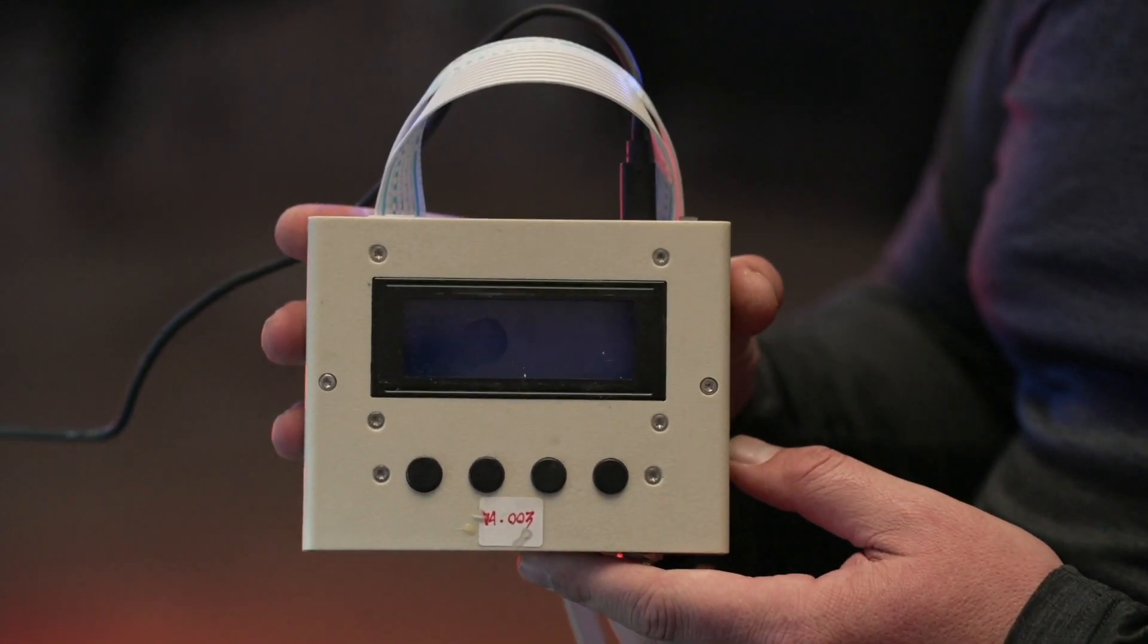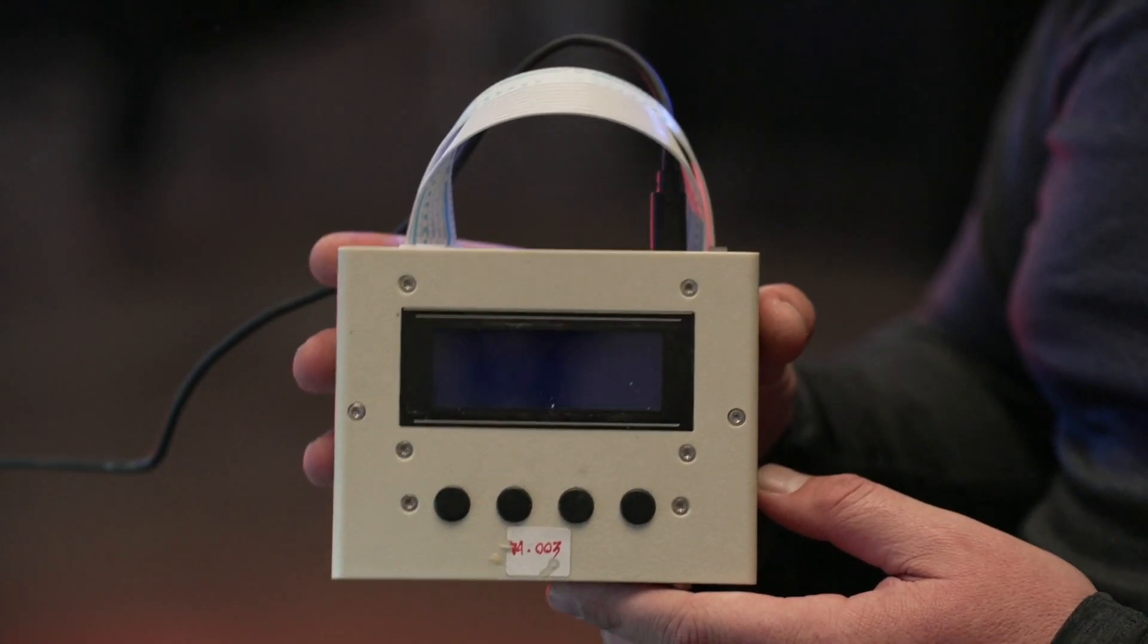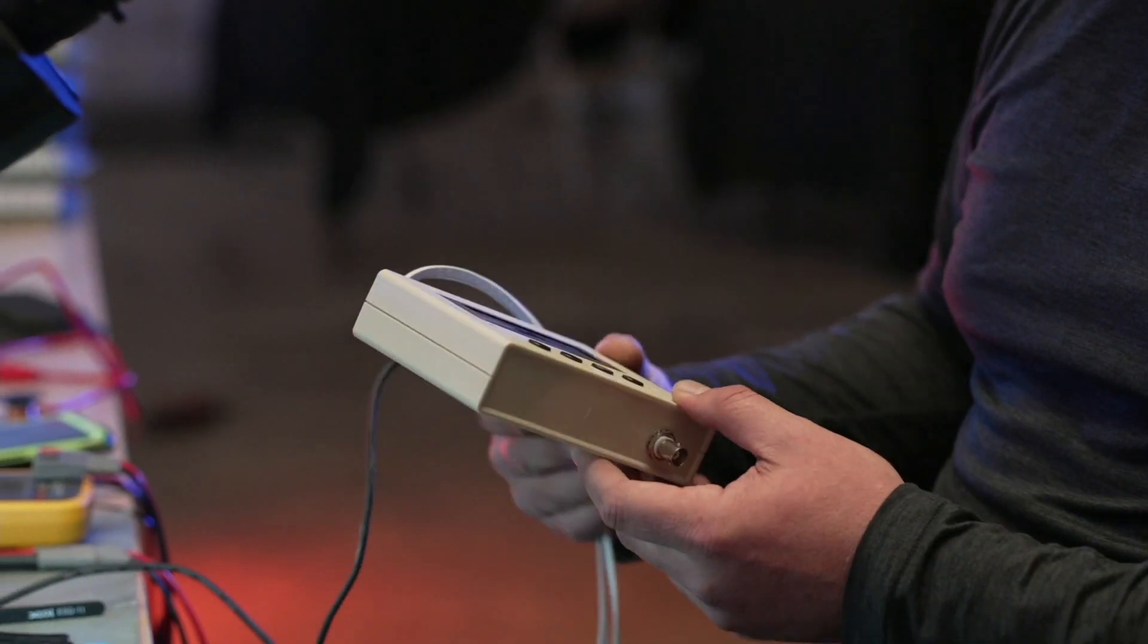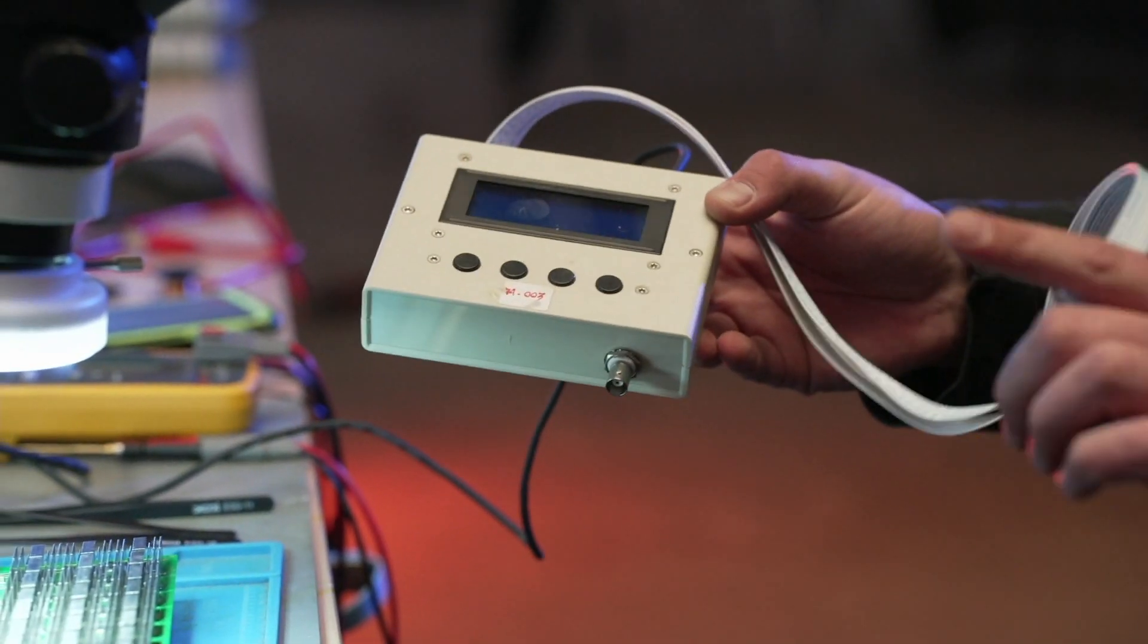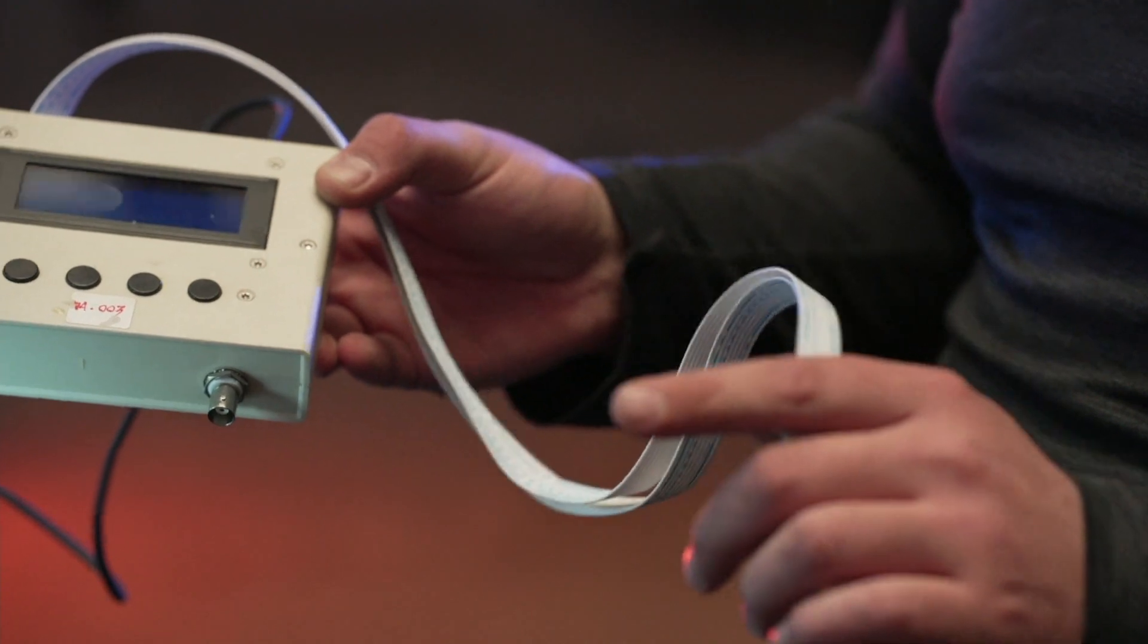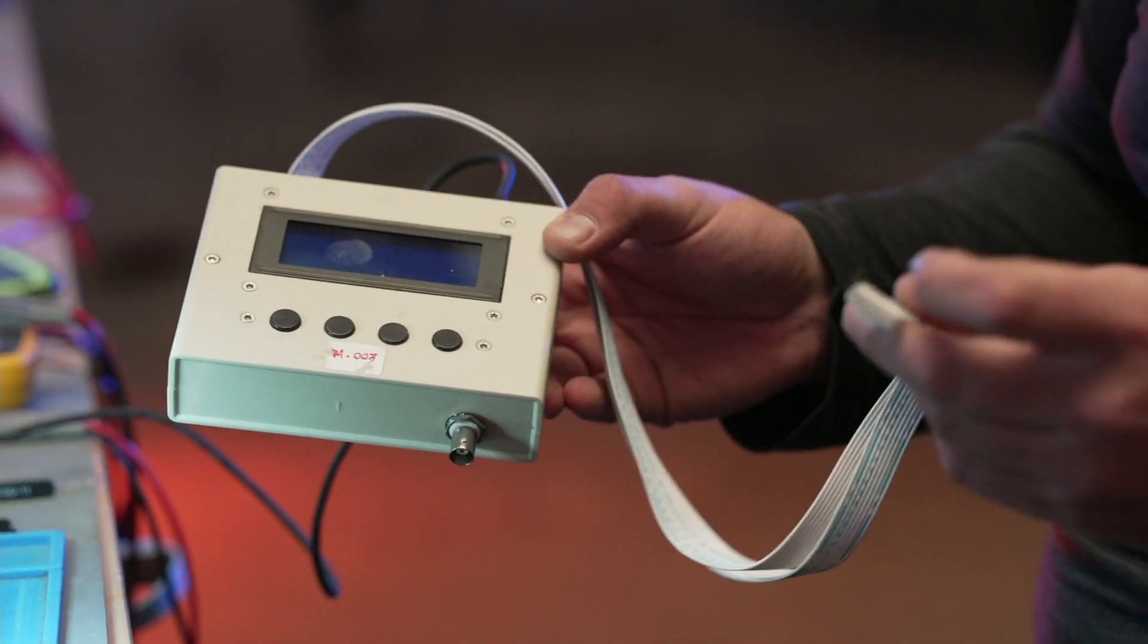Another thing we're going to need is a test fixture or a test jig. This basically plugs into the hash board to run tests, so you can put voltage through the hash board.